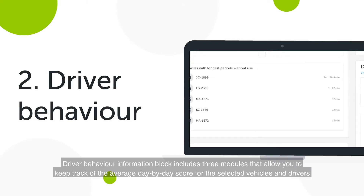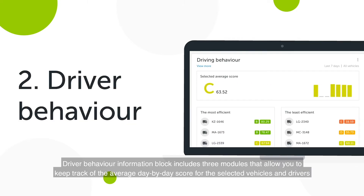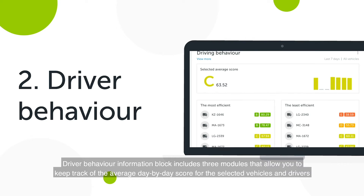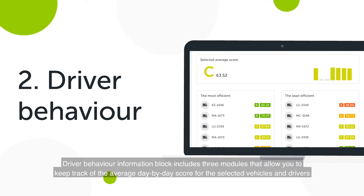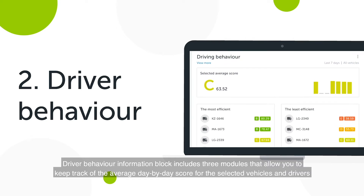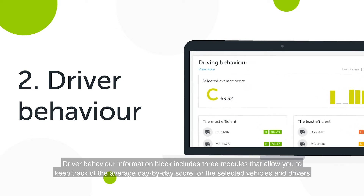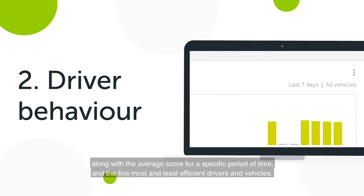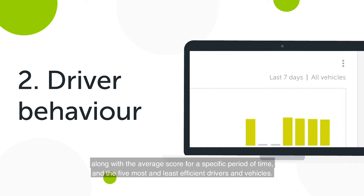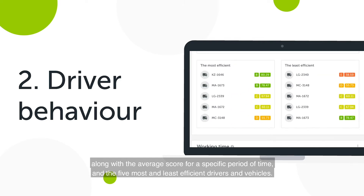Driver Behavior Information Block includes three modules that allow you to keep track of the average day-by-day score for the selected vehicles and drivers, along with the average score for a specific period of time, and the five most and least efficient drivers and vehicles.